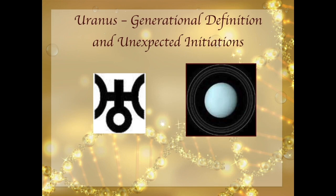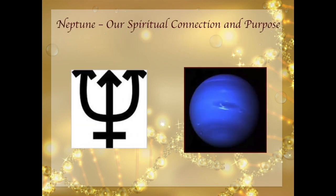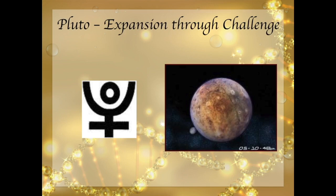Uranus is a generational pattern, and whatever is in Uranus shows us — especially collectively — about unexpected initiations. It's the place where we experience the unexpected. Neptune represents your spiritual connection and your purpose; the gates in your Neptune are often tied to your spiritual purpose. Neptune can also be murky and veiled — something that feels elusive that you really want but can't quite grasp. Pluto is the place where you experience expansion through challenge. It moves very slowly and as it moves, it sets the tone for human expansion, giving us opportunities through our challenges to deepen the full expression of our human journey.